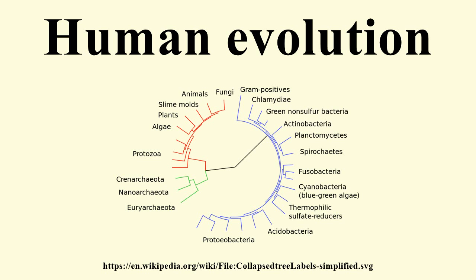The first debates about the nature of human evolution arose between Thomas Henry Huxley and Richard Owen. Huxley argued for human evolution from apes by illustrating many of the similarities and differences between humans and apes, and did so particularly in his 1863 book Evidence as to Man's Place in Nature. However, many of Darwin's early supporters did not initially agree that the origin of the mental capacities and the moral sensibilities of humans could be explained by natural selection, though this later changed. Darwin applied the theory of evolution and sexual selection to humans when he published The Descent of Man in 1871.